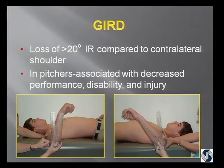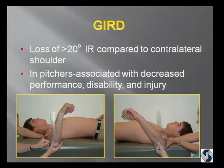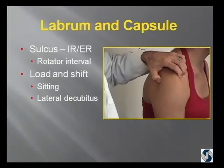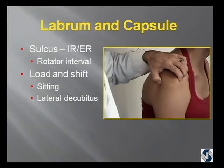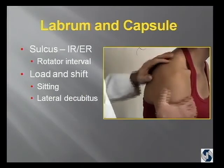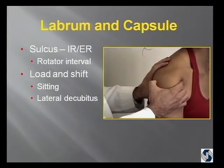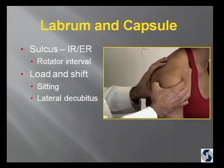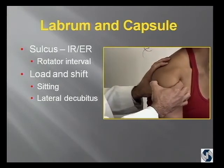I look for GERD — glenohumeral internal rotation deficit — side-to-side difference because of loss of internal rotation. In pitchers it's associated with decreased performance and disability, and some will go on to have SLAP tears. Then I do the structural testing, looking for the sulcus sign and internal and external rotation, which will assess the rotator interval and load and shift testing.